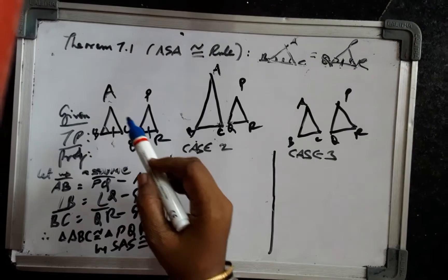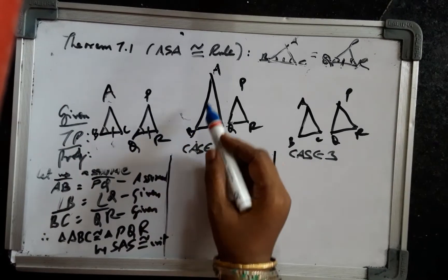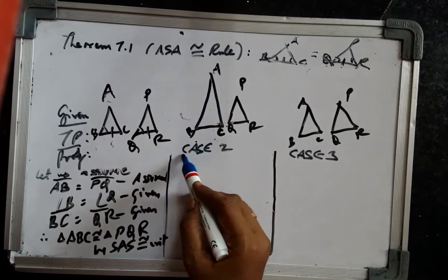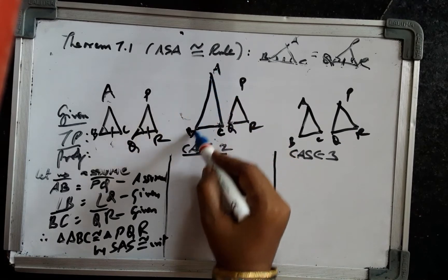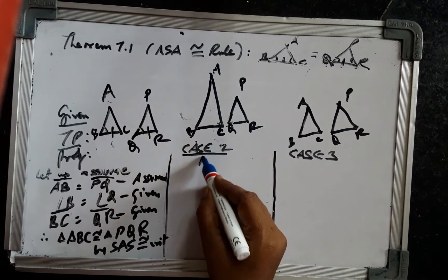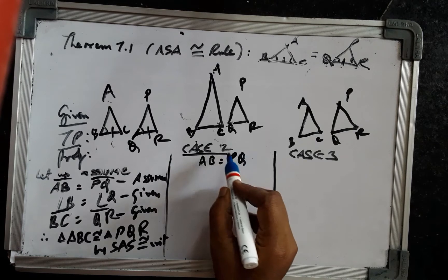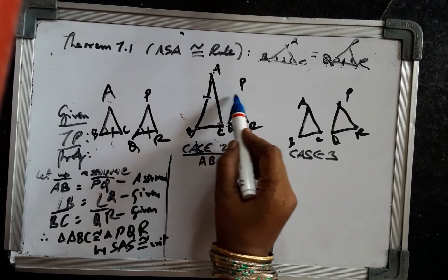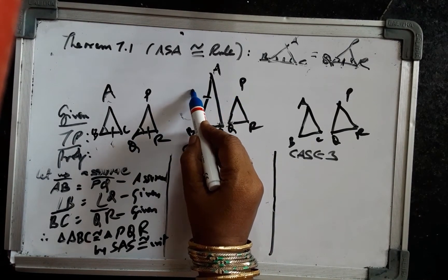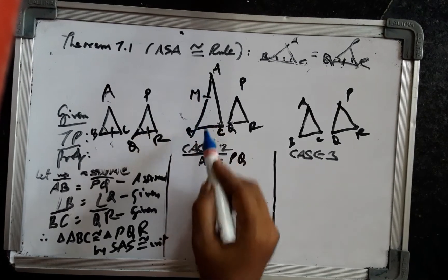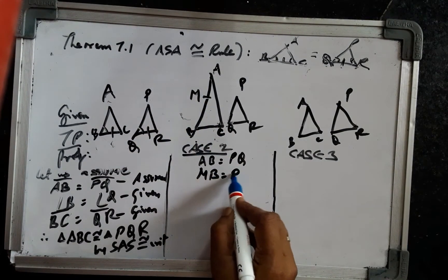In the first assumption we took AB equals PQ. In the second assumption, we say that AB is greater than PQ. Somewhere on AB, let there be a point M such that MB equals PQ.